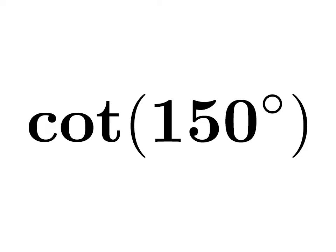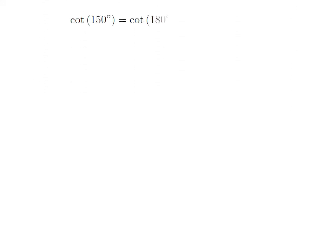In this video we will learn to find the value of cotangent of 150 degrees. As 150 degrees is equal to 180 degrees minus 30 degrees, so cotangent of 150 degrees is equal to cotangent of 180 degrees minus 30 degrees.